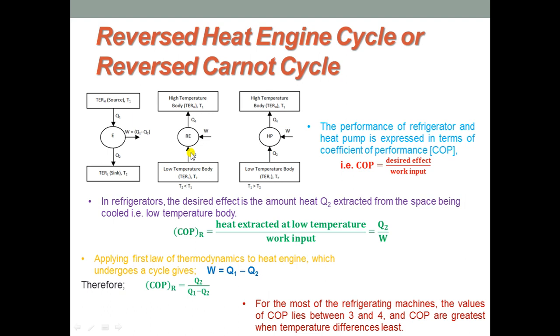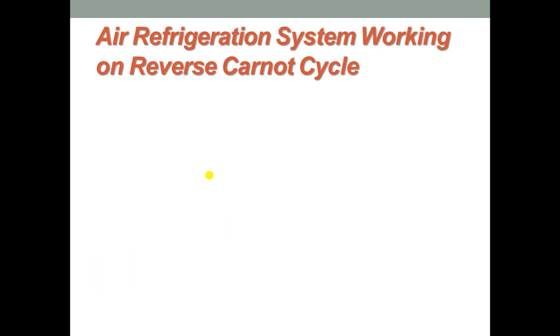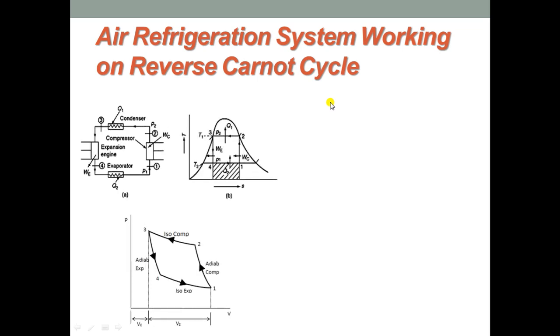We will concentrate on the refrigerator as we are dealing with refrigeration cycles in this session. Moving on to the refrigeration system working on reversed Carnot cycle principle, where the working substance used is air. There are different types of refrigeration systems: air refrigeration, vapour compression refrigeration system, vapour absorption refrigeration system, and steam jet refrigeration. In this session we will discuss air refrigeration system.